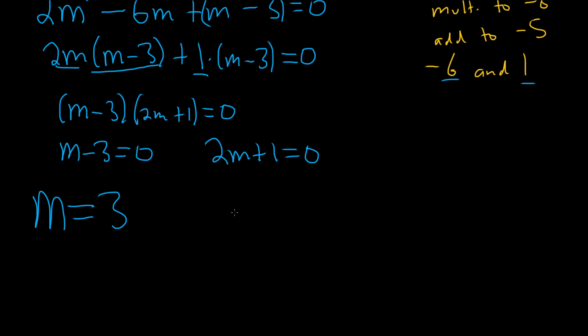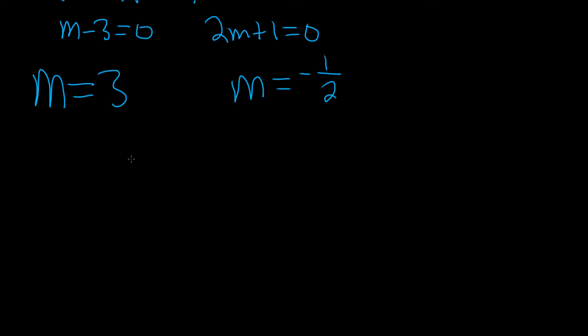And then subtract 1, divide by 2. So m equals negative 1 half in this case here. So we have the case where we have what's called distinct real roots. We have two real numbers, and they're different. Whenever you have something like this, there's a formula you can use.